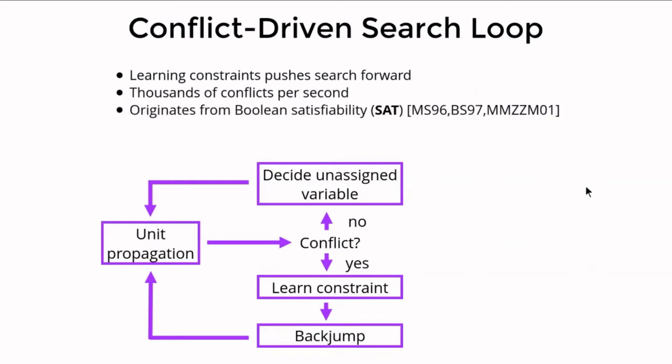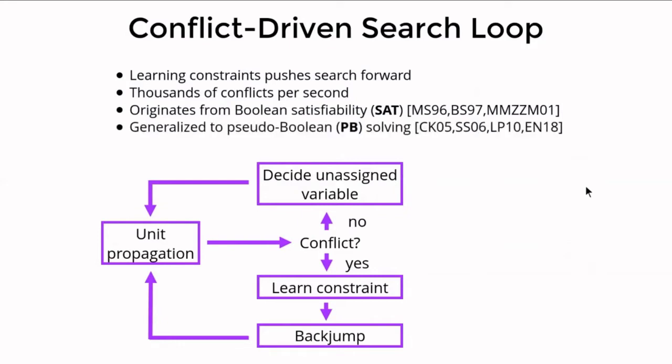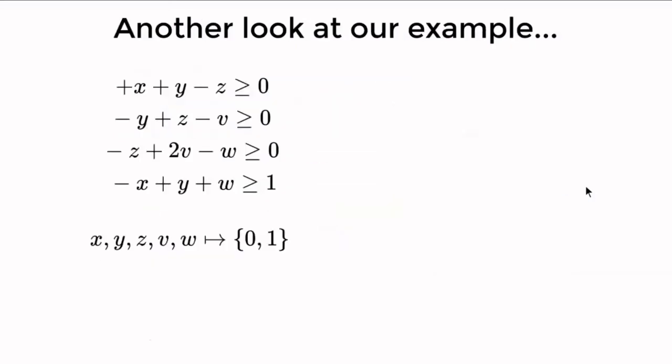Conflict-driven search was first developed for boolean satisfiability and has been generalized to pseudo-boolean solving, which uses zero-one integer linear inequalities as constraints. Learning a constraint from a conflict is a tricky technique with many degrees of freedom, but this is also where the power of conflict-driven systems comes from. Let's have another look at the example.